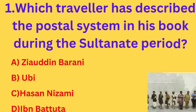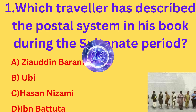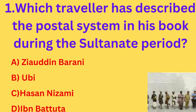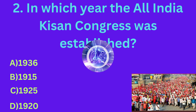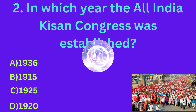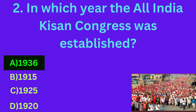Which traveler has described the postal system in his book during the Sultanate period? The correct answer is option D: Ibn Battuta. In which year was the All India Kisan Congress established? The correct answer is option A: 1936.